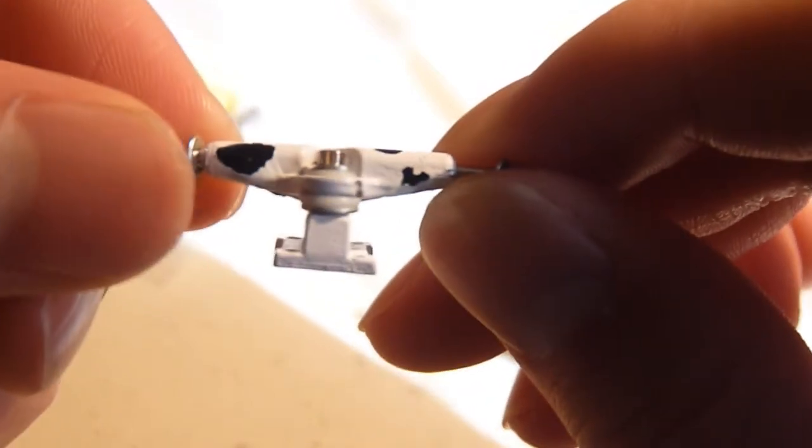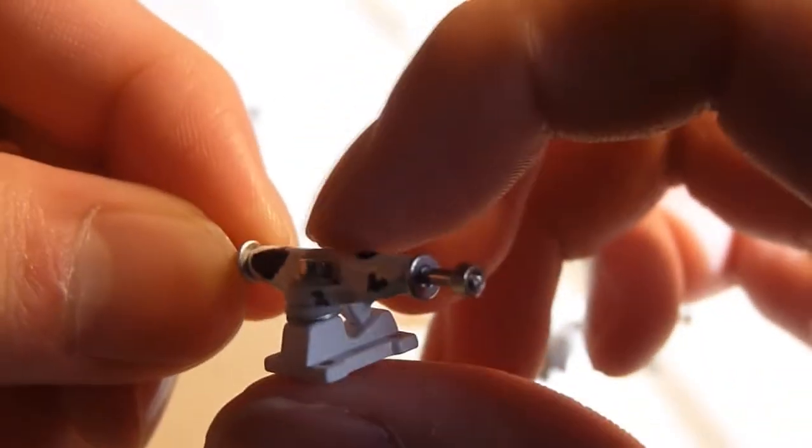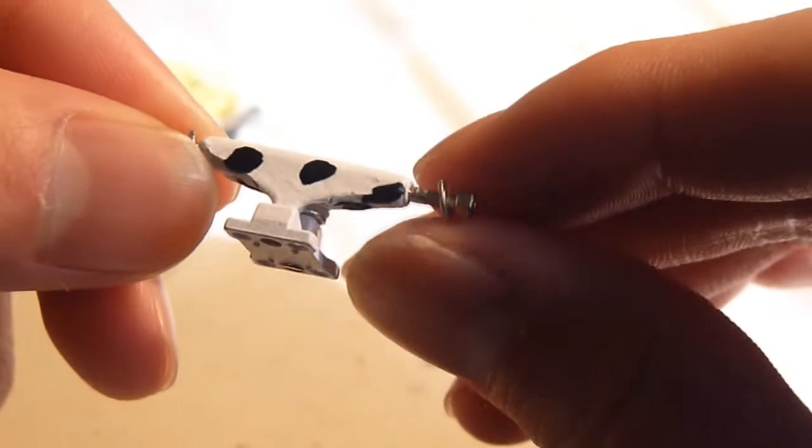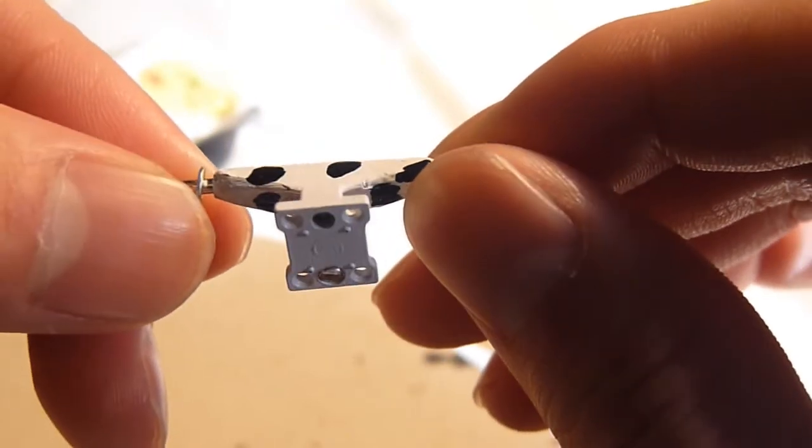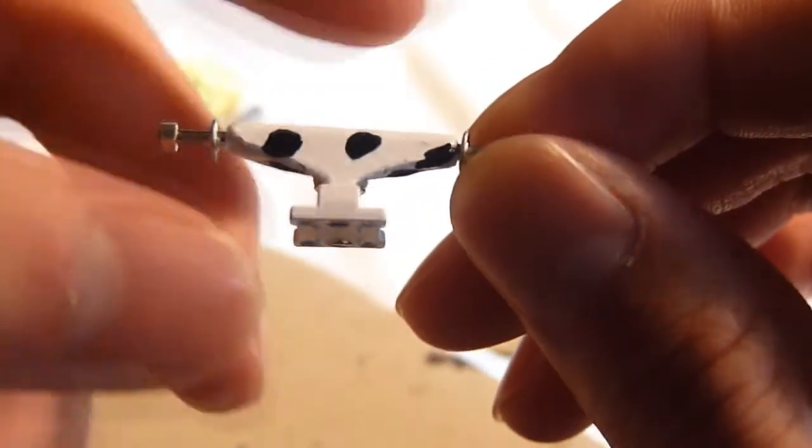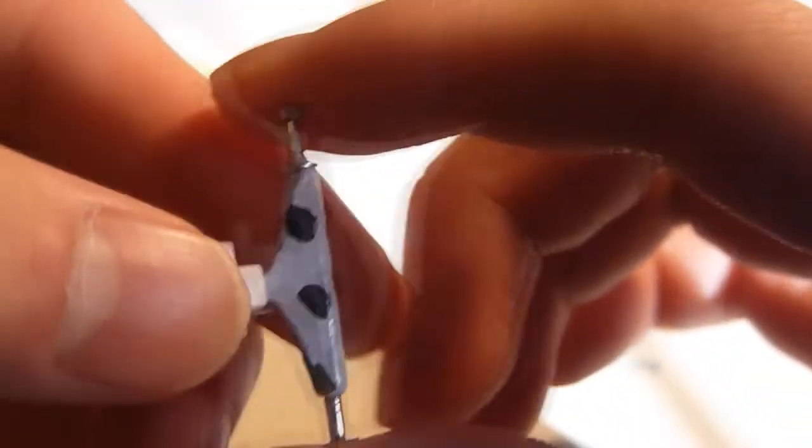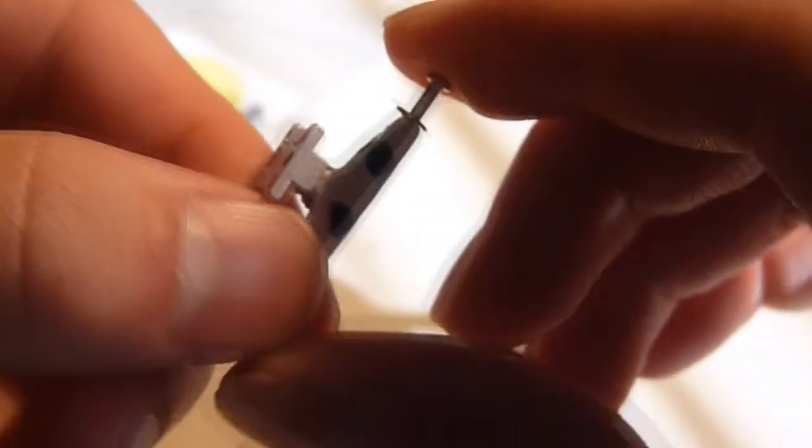They do come with a soft bushing kit. The king pins do not stick out over the top, so you get a smooth grind. They come with silver hardware. The bolts are silver instead of black.